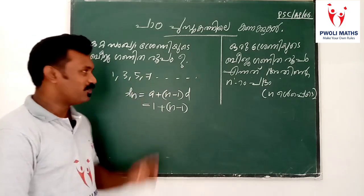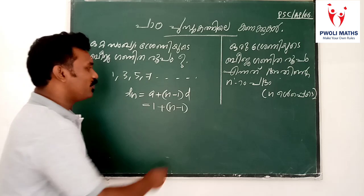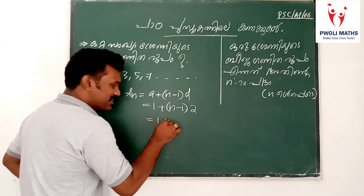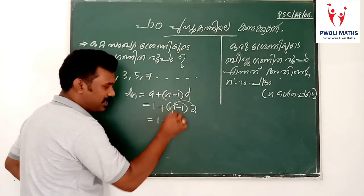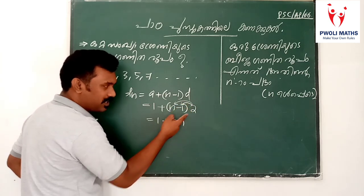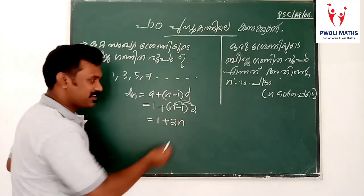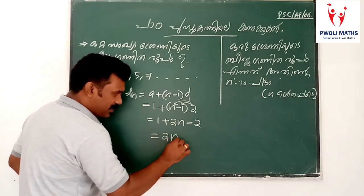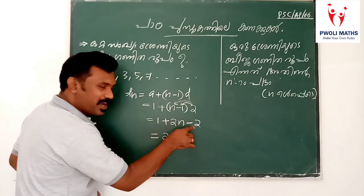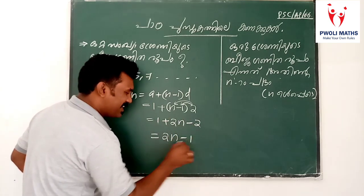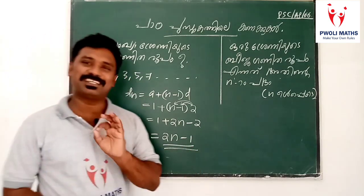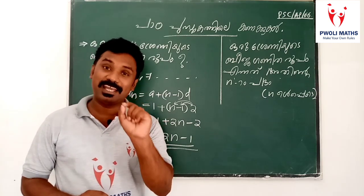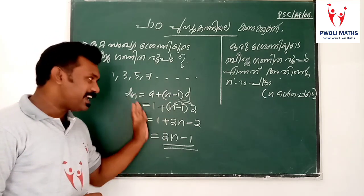1, 3, 5, 7. d equals 2. Simplify: 1 plus 2 into n, 2 into n minus 1, 2 into n minus 1, 2n plus 1 minus 2, minus 1. Result: 2n minus 1.